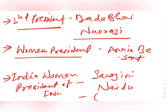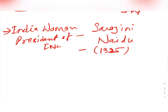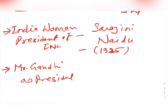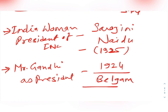Sarojini Naidu became president in the year 1925. Was Gandhiji ever president of the Indian National Congress? Yes, Gandhiji became president in the year 1924 at Belgaum. These are some important facts related to the Indian National Congress. After these facts, we will understand the objectives and background of the formation of the INC.